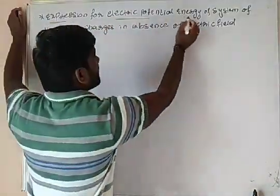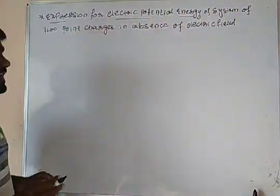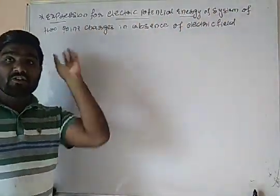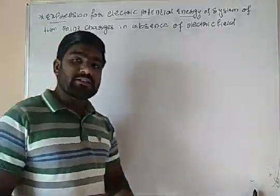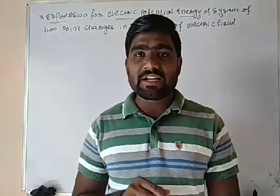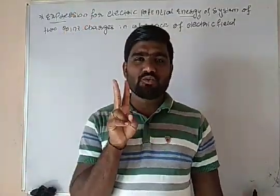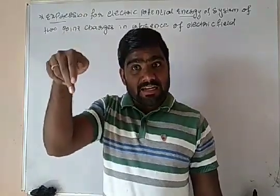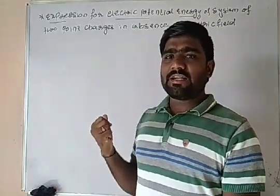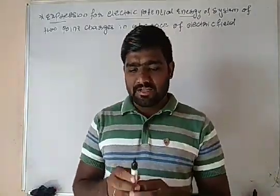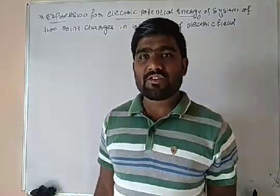Expression for electric potential energy of a system of two point charges in absence of electric field. There are two derivations: one is in absence of electric field, and the second one will be in presence of electric field. Here we are taking in absence of electric field, meaning these two point charges are kept in absence of electric field.